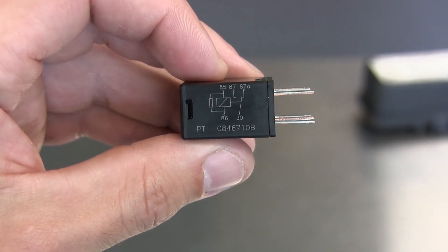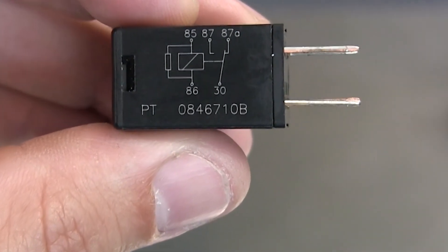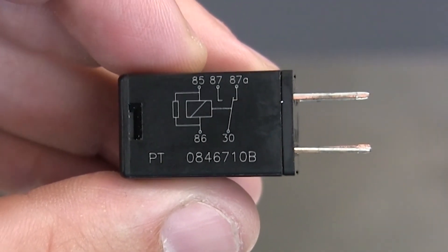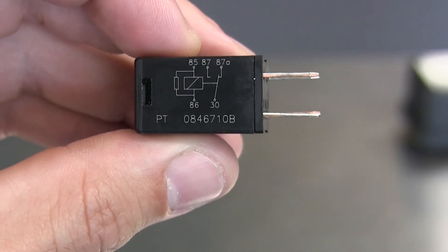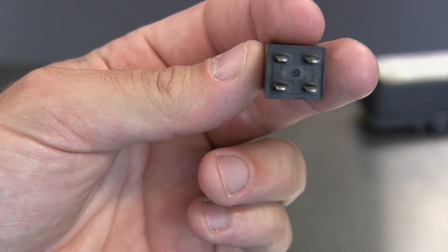If you're lucky, the relay has a diagram printed on its casing, which will easily let you know which terminal is which. And it's a quick refresher on how relays work. The numbers are there, even though they're sometimes hard to read.